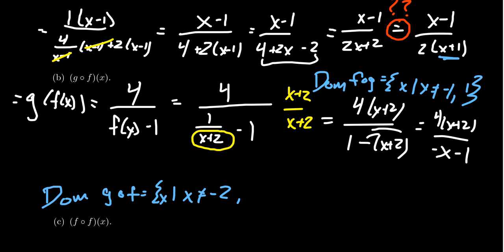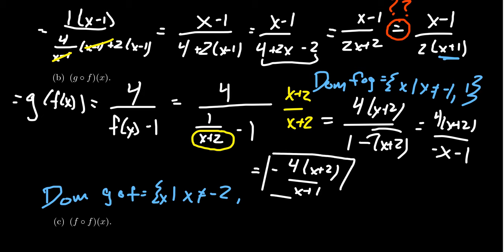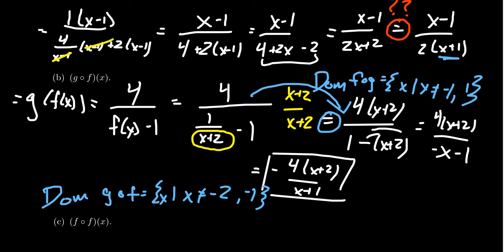Assuming we did everything correctly, distributing the negative sign in the denominator gives negative x minus 1. Since everything in the denominator is negative, we factor out the negative to get negative 4 times x plus 2, all over x plus 1. From the final form, we see that x cannot equal negative 1. We must also remember the restriction from the original form — x cannot equal negative 2. That's the most common mistake: forgetting that restriction. These two expressions are not equal when x equals negative 2.